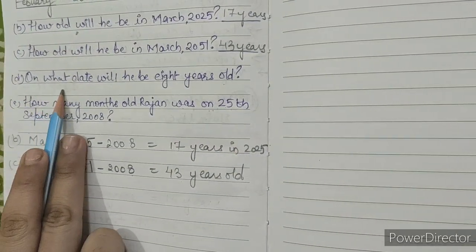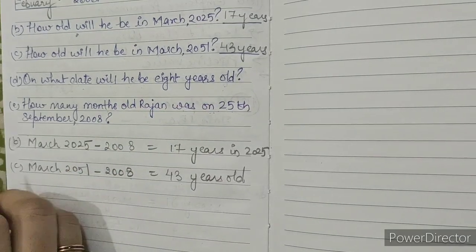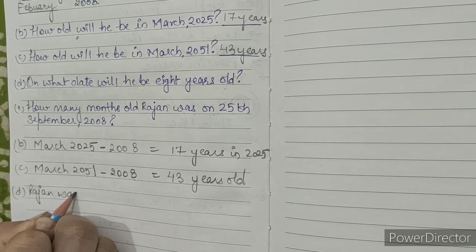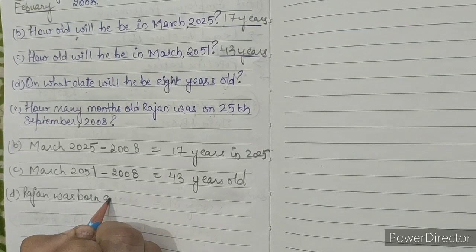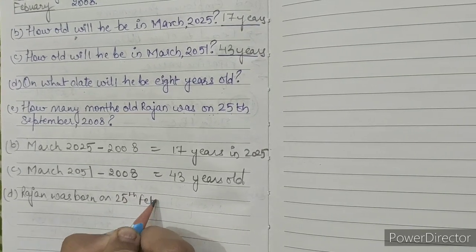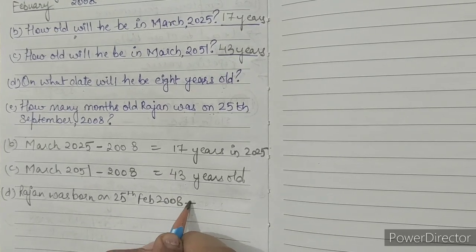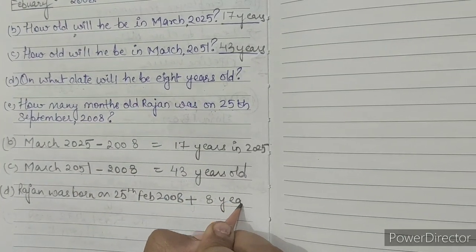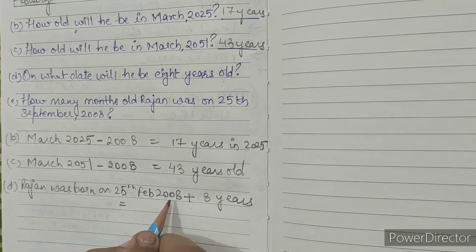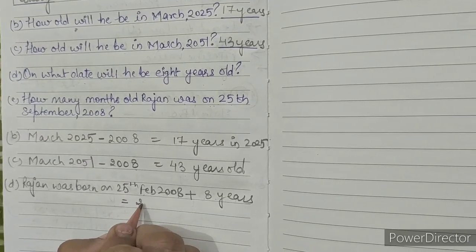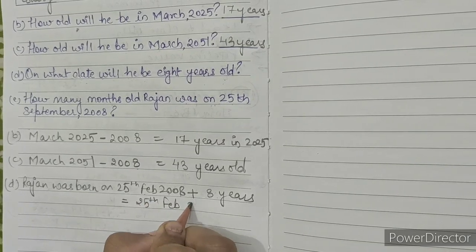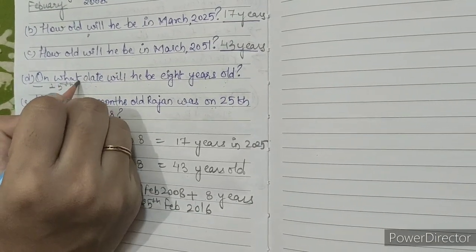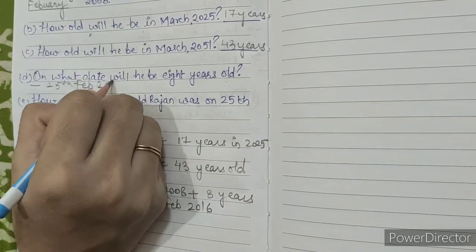D. On what date will he be 8 years old? Rajan was born on 25th February 2008. We add 8 years: 25 February 2008 plus 8 years gives 25 February 2016. So our answer is 25 February 2016.